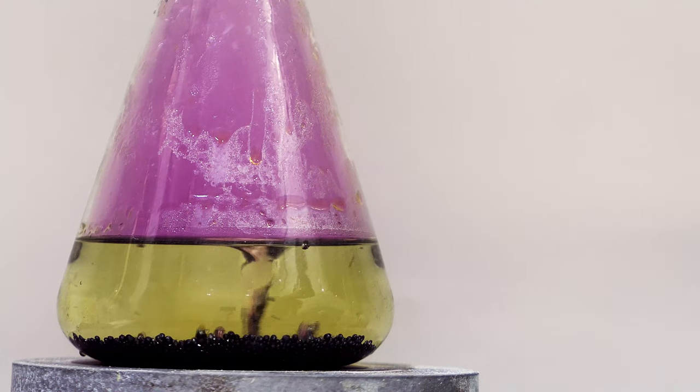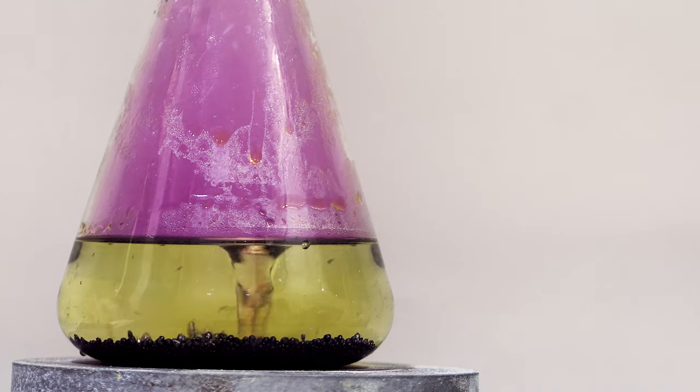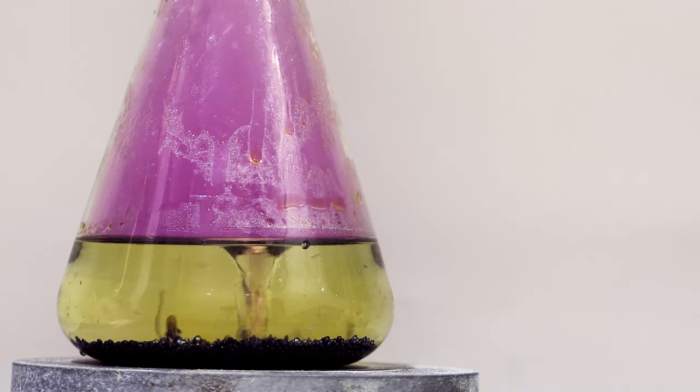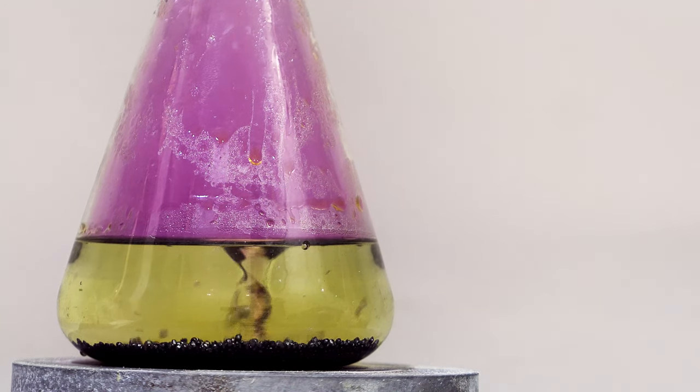First, dissolve 62 grams of potassium chlorate in roughly 200 milliliters of warm water. Then 1 milliliter of nitric acid is added using a pipette. After that, 72 grams of elemental iodine is poured into the reaction flask.